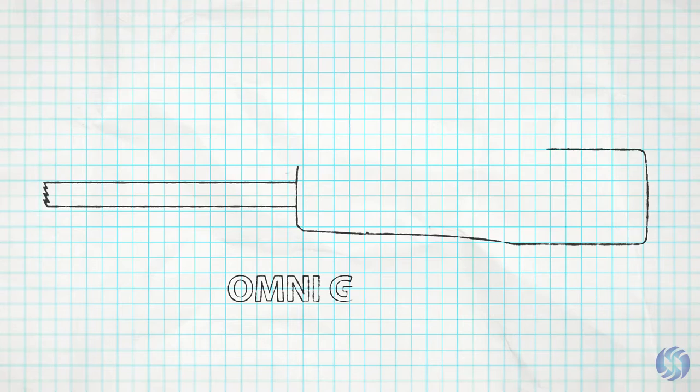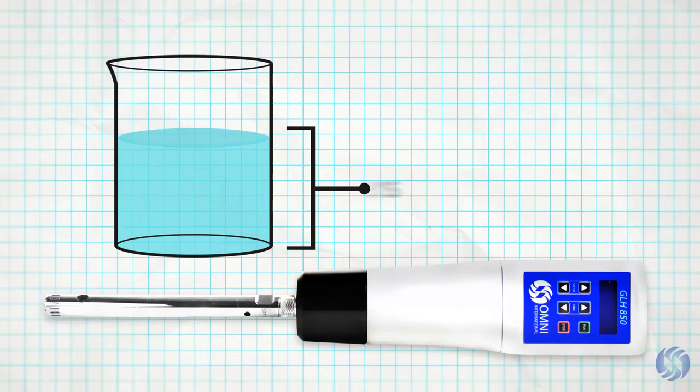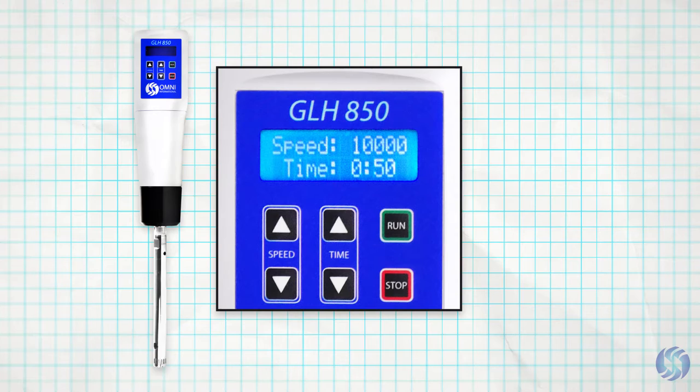The Omni GLH 850 is a larger, more powerful motor capable of processing samples up to 5 liters in volume. The 850 is the only model in its class and price range that features both a digital speed display and timer for walkaway processing.